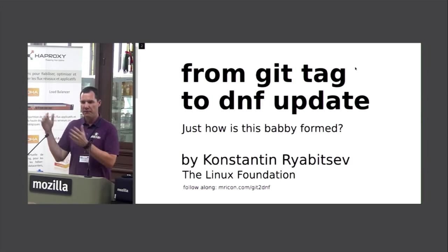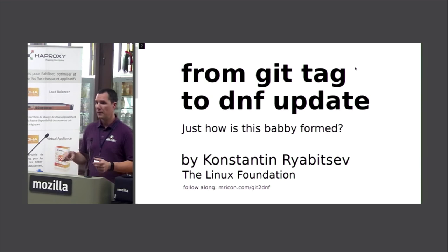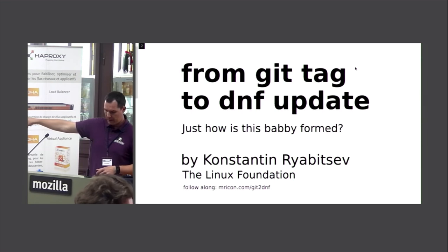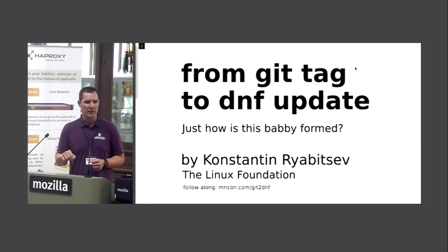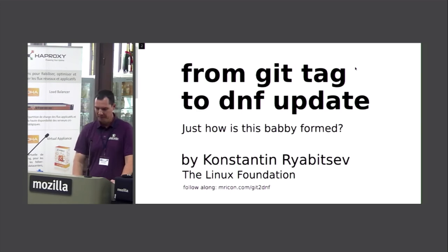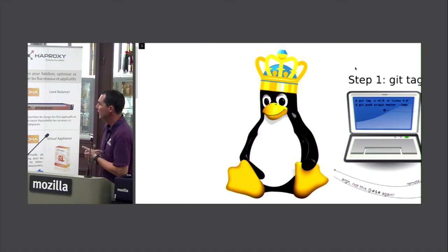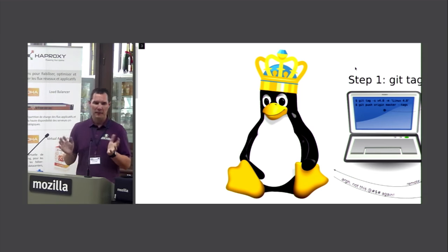If you want to follow along, we're going to be doing a lot of zooming and panning. There's a companion page at mricon.com/git-to-dnf. I know this is not going to be popular, but it works better in a WebKit browser. We're doing a lot of panning and zooming on an SVG document, and it works better in WebKit.